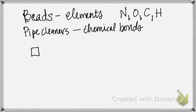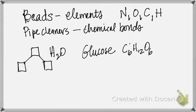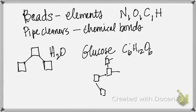We first built a water molecule, and then we built glucose — C6H12O6 — which was a pretty big molecule with six carbons. The carbons formed like a chain with hydrogens and oxygens coming off of each one.